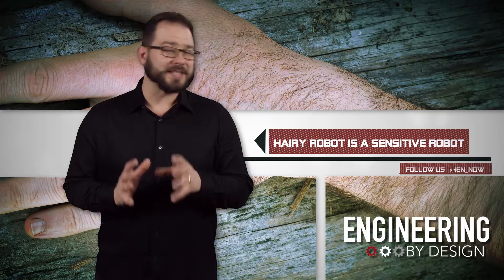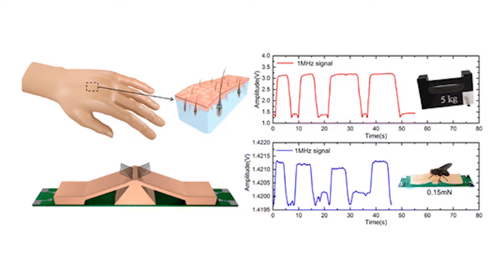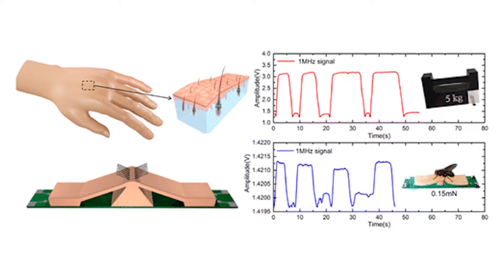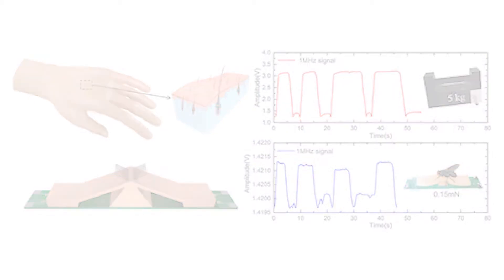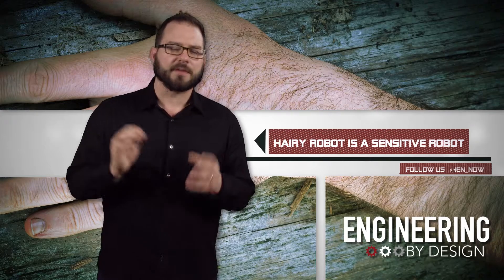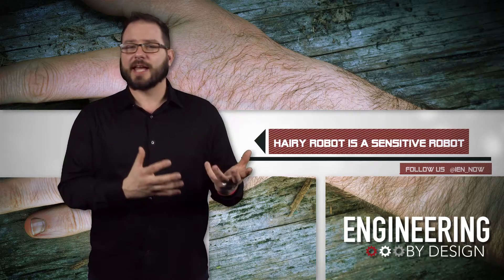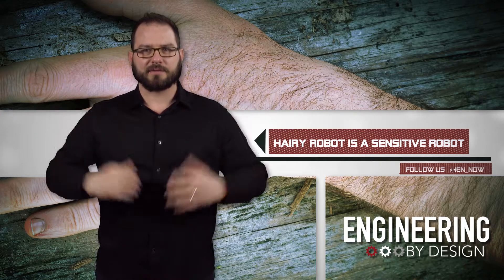In a new report on Applied Materials and Interfaces, the researchers show how they created an array of artificial hairs with glass-coated, cobalt-based microwires and embedded them into a fake skin made of silicon rubber. This hairy skin is much more sensitive and can detect anything from a light breeze to a pesky fly.